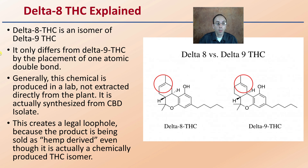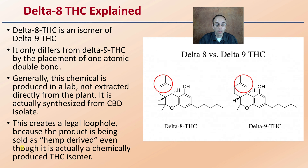Delta-8 only differs from Delta-9 in the placement of that atomic double bond — it's only a structural difference at the molecular level. This chemical is generally produced in a lab and not extracted directly from the plant; it is actually synthesized from a CBD isolate. This creates a legal loophole because the product is being sold as hemp-derived, even though it's actually a chemically produced THC isomer. This is why there's some confusion and why some companies are advertising Delta-8 THC so heavily compared to Delta-9.